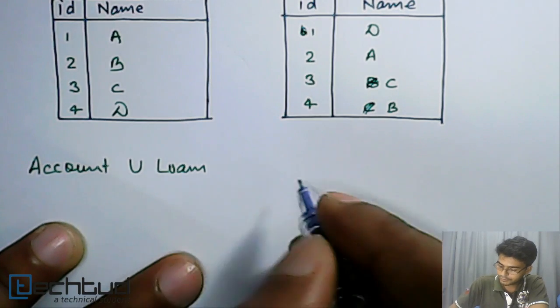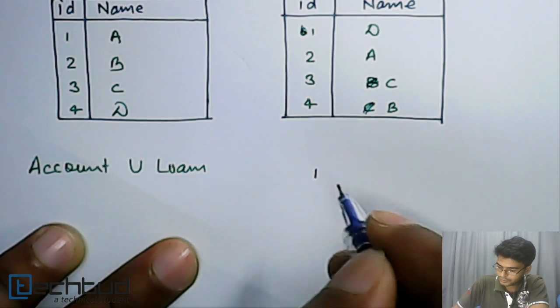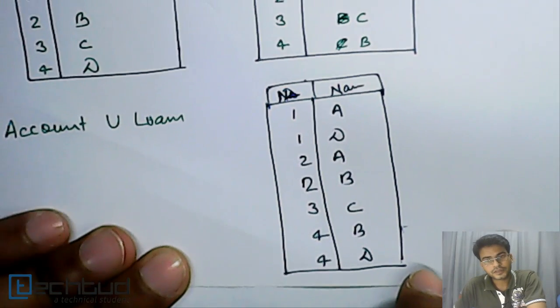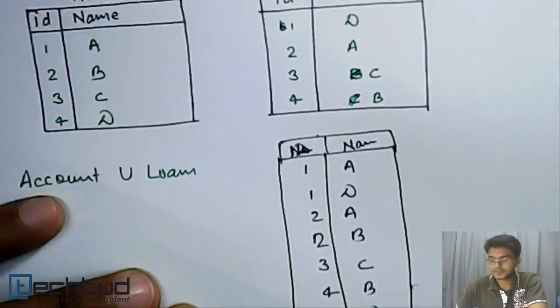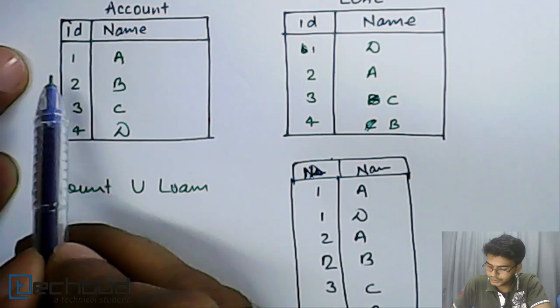The result will contain all the records which are here and here or at both the places. Either here or here or both the places. Let's see what will be the record. When we find out the union of this, this will be our result.